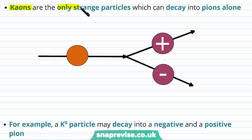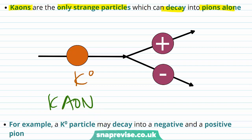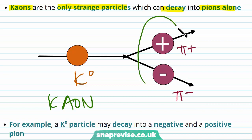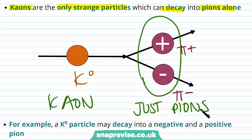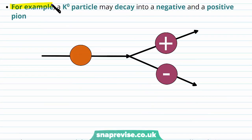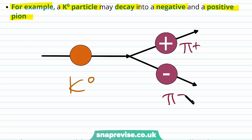Kaons are the only strange particles which can decay into pions alone. For example, a neutral kaon can decay into a positive pion and a negative pion — and that's all. What's special about kaons is that they are able to decay exclusively into pions, whereas other strange particles cannot decay into pions alone.